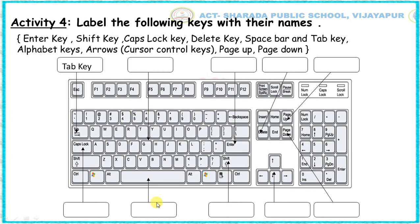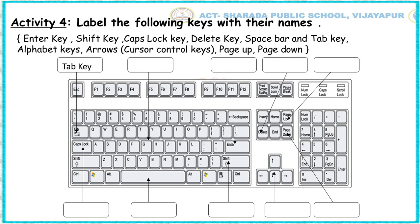Children, have you understood? Can I solve one more for you? This box here is pointing to the longest key on the keyboard — that is the Spacebar. You have to write Spacebar, and that option is also available in the names of the keys. Children, have you understood this activity? Complete the worksheet and read the worksheet. Enjoy the day. Thank you.